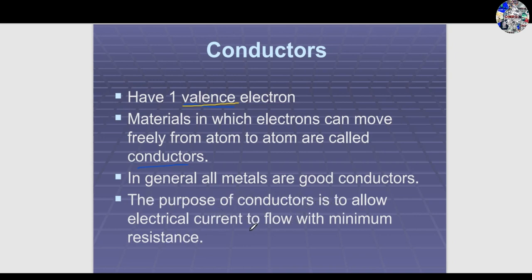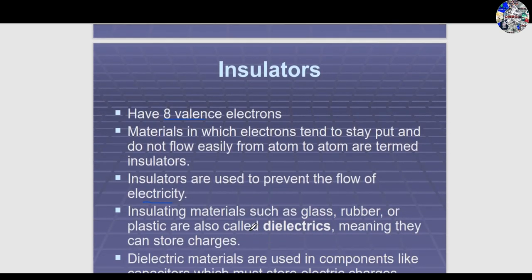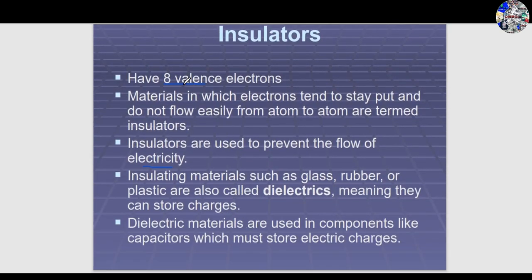Insulators are atoms having eight valence electrons, meaning the outermost shell is completely filled. Materials in which electrons tend to stay put and do not flow easily from atom to atom are known as insulators. They are used to prevent the flow of electricity. Insulating materials such as glass, rubber, and plastic are also called dielectrics, meaning they can store charges. A commonly known dielectric component is a capacitor.